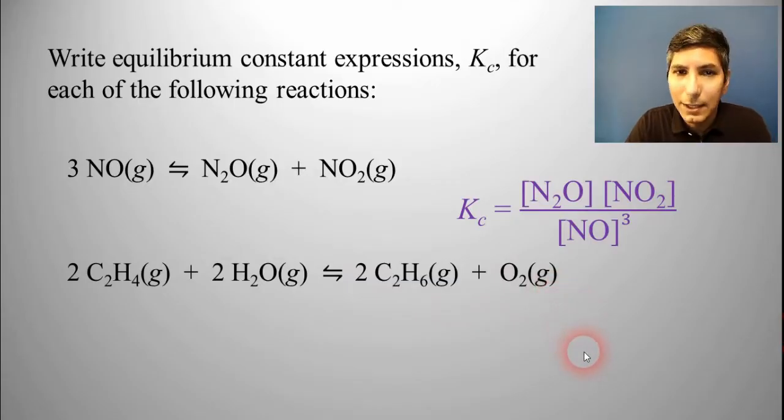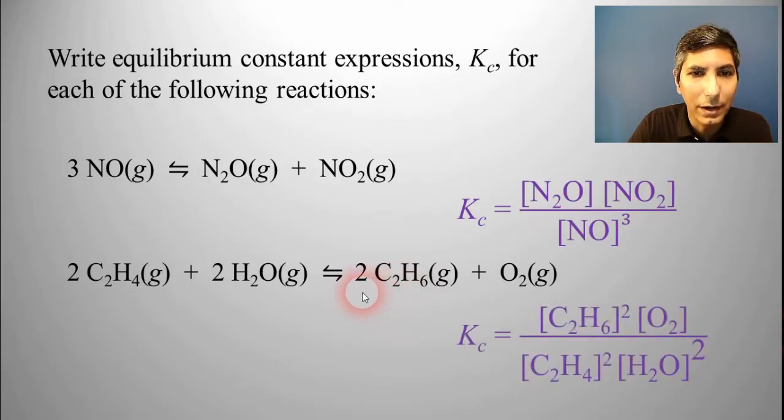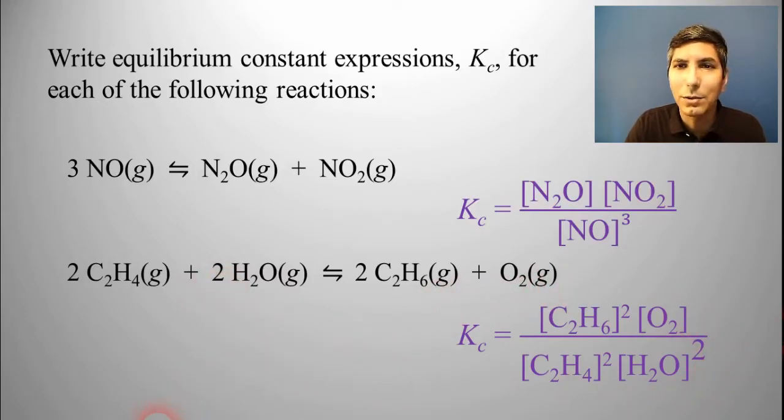It's done the same way. KC equals C2H6 squared times O2 to the first power, because there's no other coefficient here, all over C2H4 squared times the concentration of H2O squared. There's our equilibrium constant expression, products over reactants raised to the power of the coefficient.